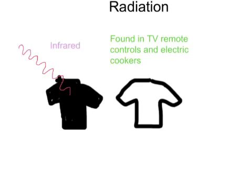And this is because the sun releases infrared light and black clothes absorb this infrared radiation, making the clothes become warm. Whereas white clothes reflect the infrared radiation, keeping you cooler.